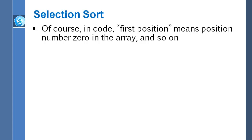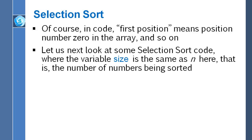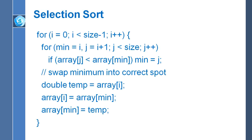Once again, when I speak about the first position of the array, I actually mean position number zero. So next thing is, we'll take a look at the code that I'm providing for selection sort. Just like with bubble sort code, the variable size is going to actually play the role of n, meaning it's the number of numbers being sorted.